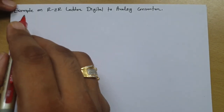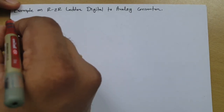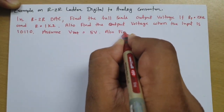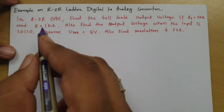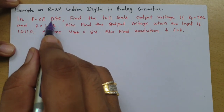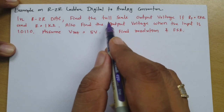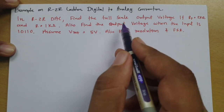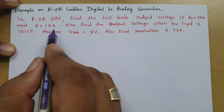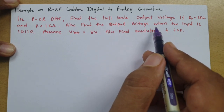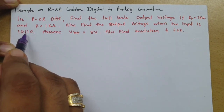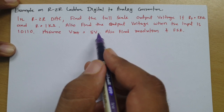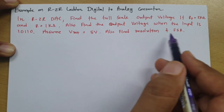To understand this session, let me give you a question first. In the question, an R2R DAC is given and we are required to find the full scale output voltage, where RF equals 2 kilo ohm and R equals 1 kilo ohm. We also need to find the output voltage when the input is 1 0 1 1 0, assuming V reference equals 5 volts, and to identify the resolution and full scale range.